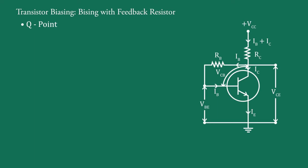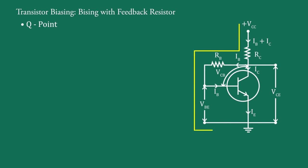Now, for the Q-point of the circuit, we need IB, IC, and VCE. Consider the input section and take the loop from +VCC through RC, RB, and VBE to ground. By applying Kirchhoff's law, we can write: VCC = (IB + IC) × RC + IB × RB + VBE.